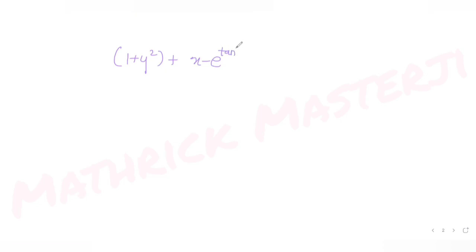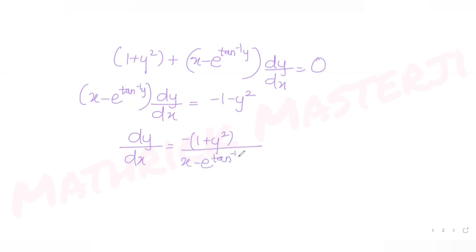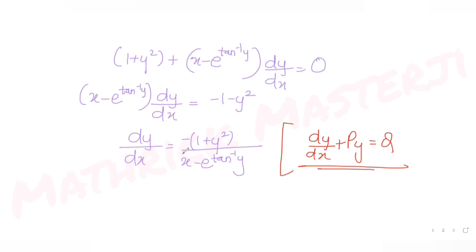The differential equation is (1 + y²) + (x − e^(tan⁻¹y)) dy/dx = 0. Rearranging for dy/dx: (x − e^(tan⁻¹y)) dy/dx = −(1 + y²), so dy/dx = −(1 + y²) / (x − e^(tan⁻¹y)). We cannot write this in the standard form dy/dx + Py = Q since x appears instead of y.